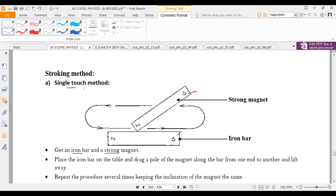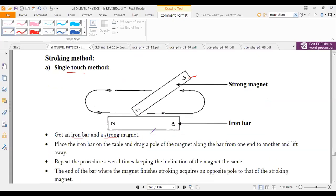We place the iron bar on a table or stool, wherever is easier for you to place the iron bar that you want to convert into a magnet.